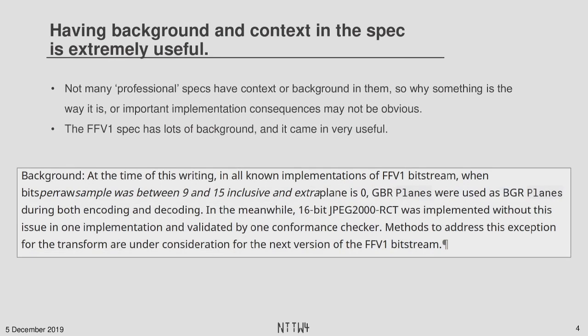So this next one may or may not be a little controversial, but I think having background and context in the spec itself and not shunted in an annex somewhere or hidden in a proposal on a mailing list that's archived from 10 years ago is extremely useful. A lot of the implementations benefit from knowing why something is the way it is, and FFV1 has a lot of this in its spec, and it became quite useful. Spec purists might say a spec's only supposed to be a reference, but my retort would be, the spec is meant to help people implement your thing, and if background and context is what is needed to implement this thing, it should be in the spec.